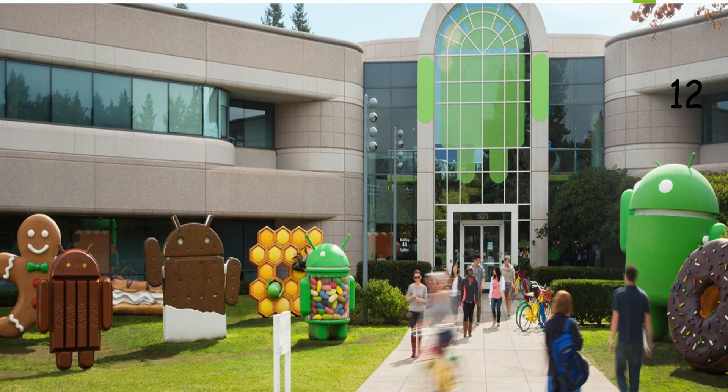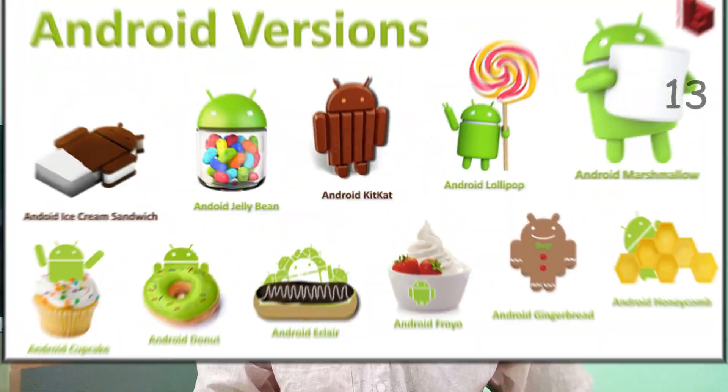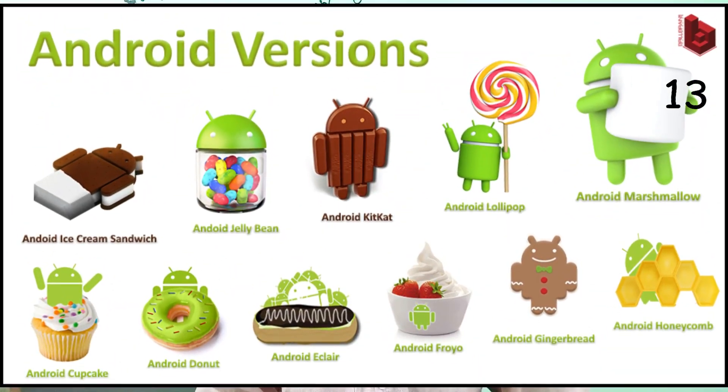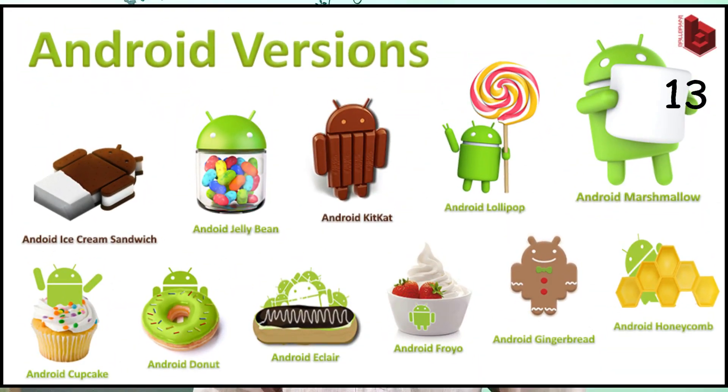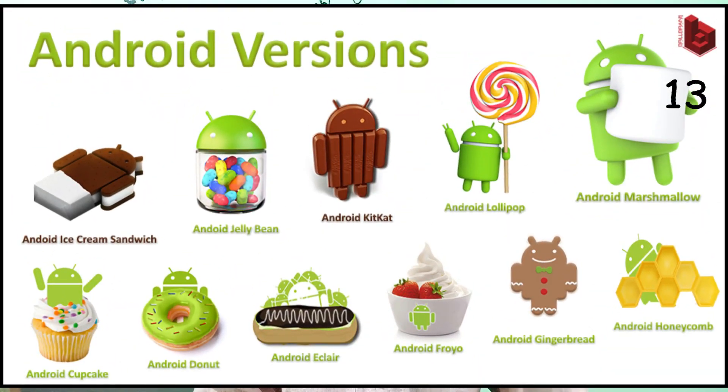The Android version is used in Google. The Android version started with 1.0 and 1.1 versions, and the Android versions are named in alphabetical order.